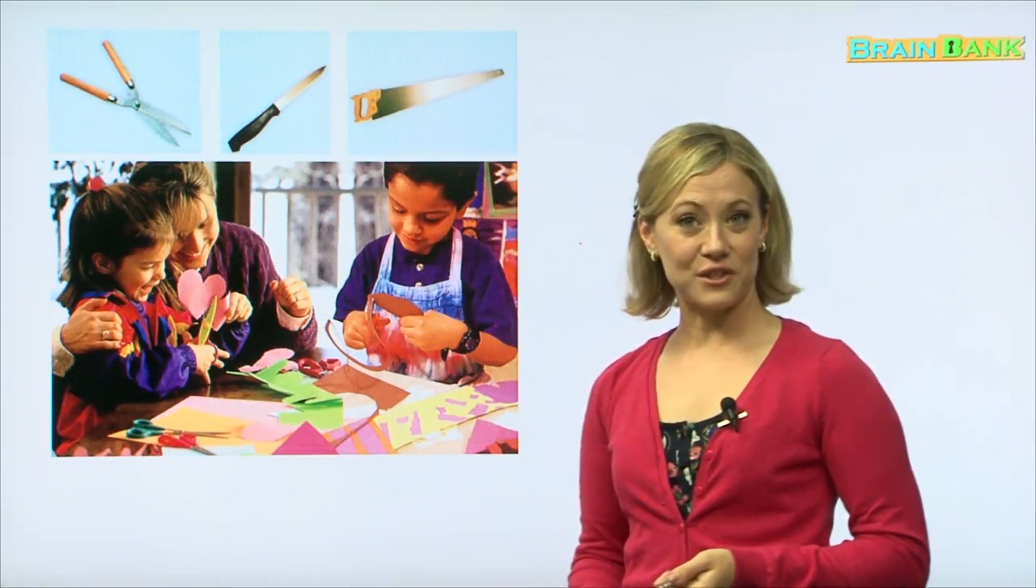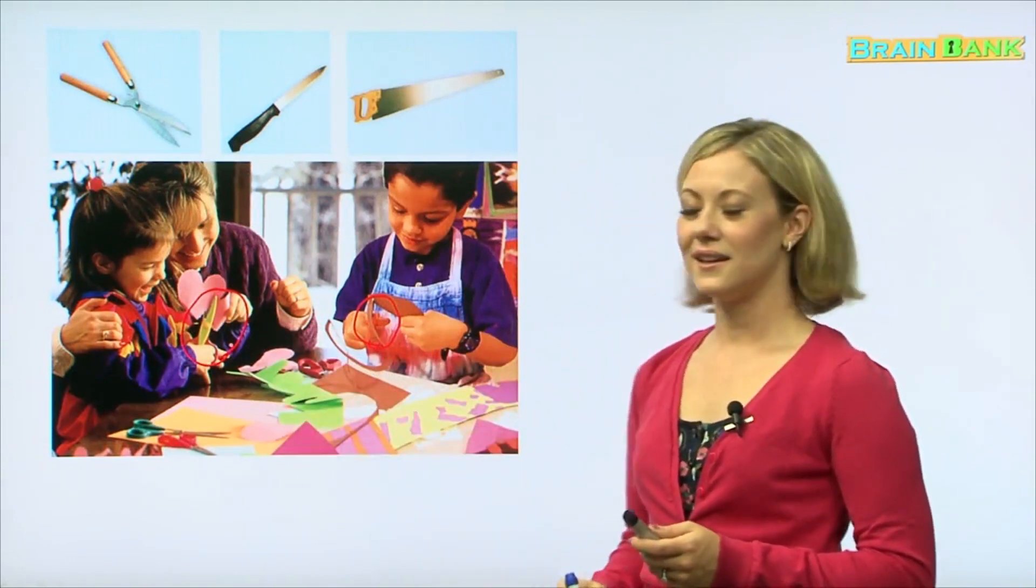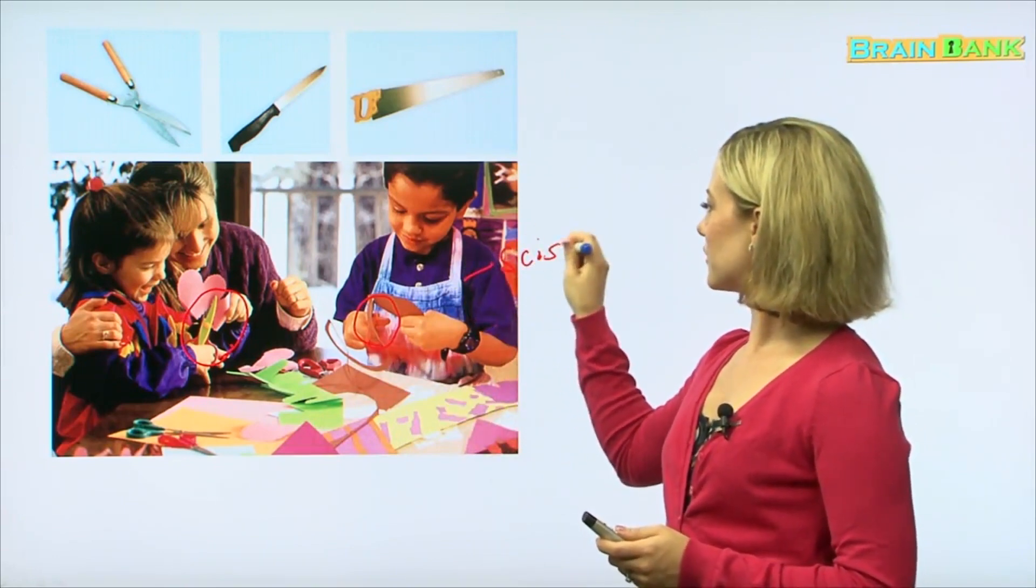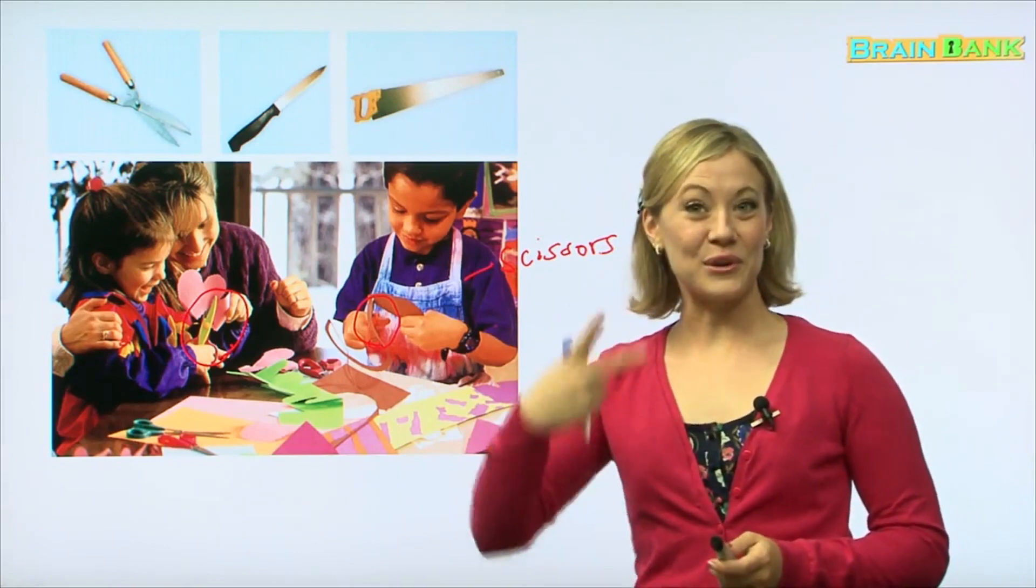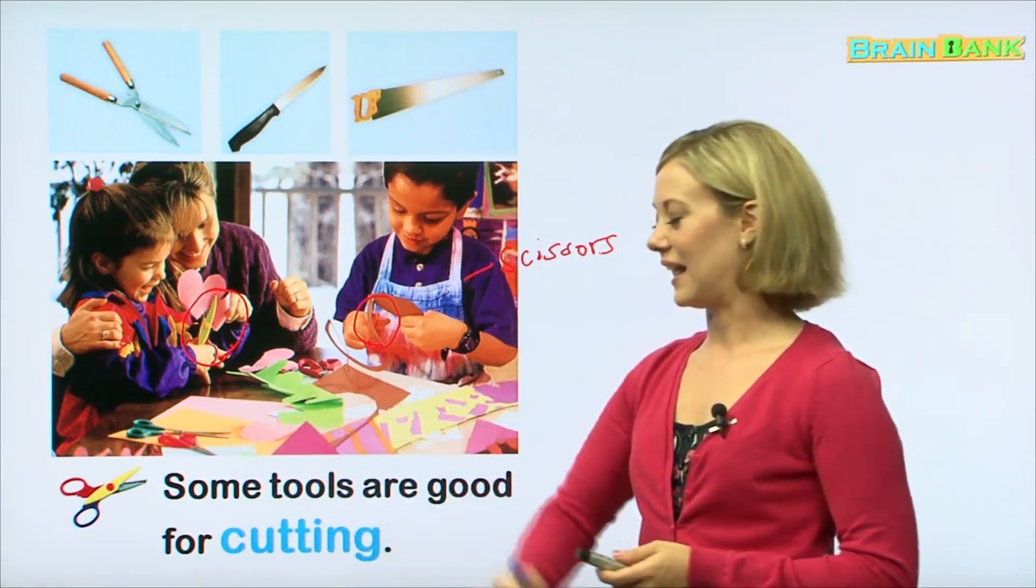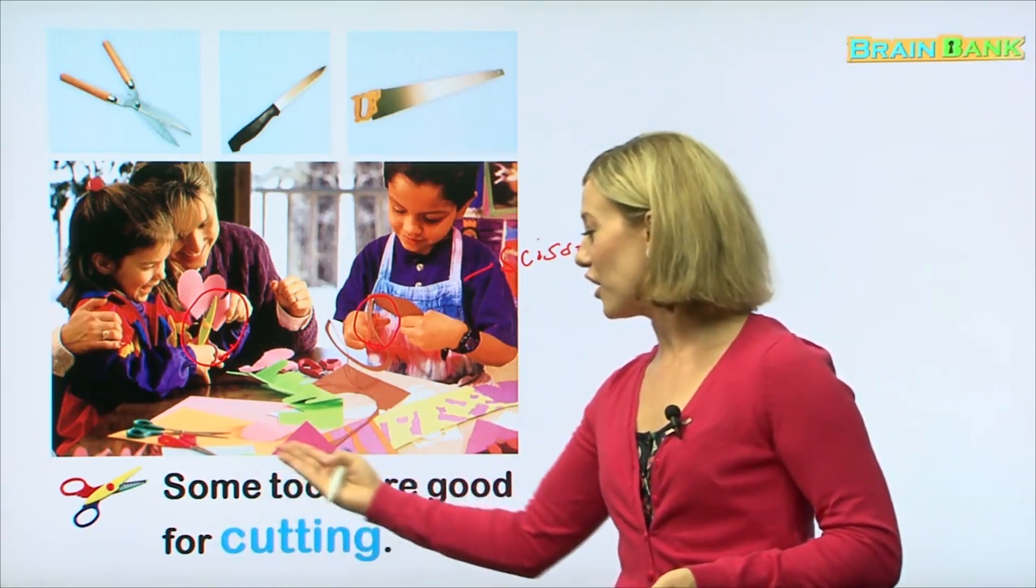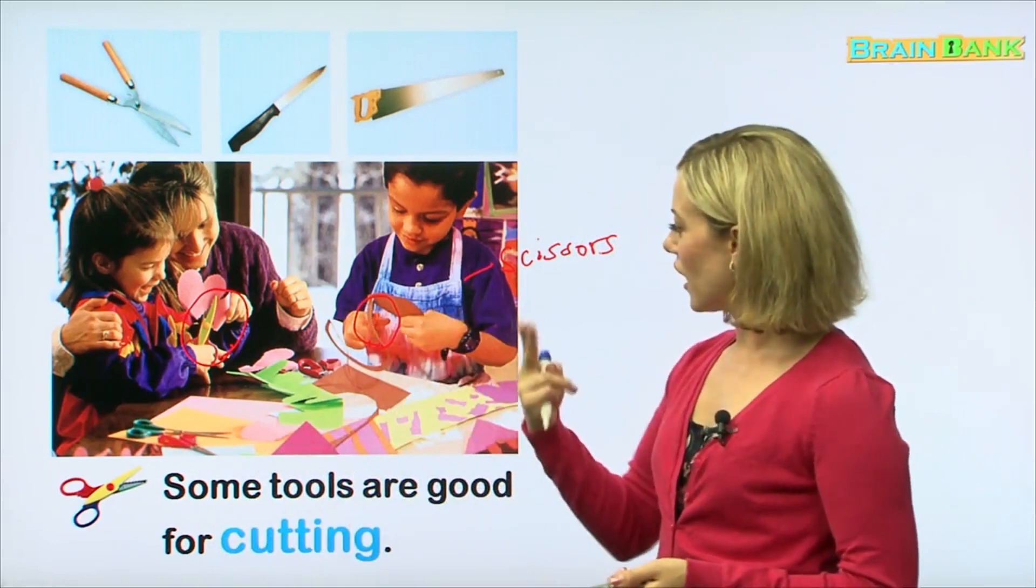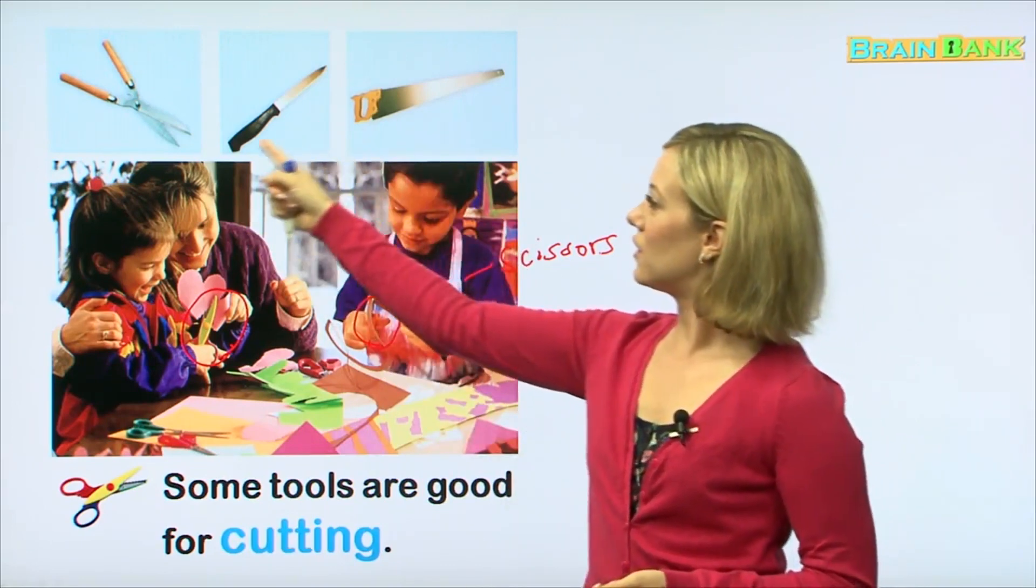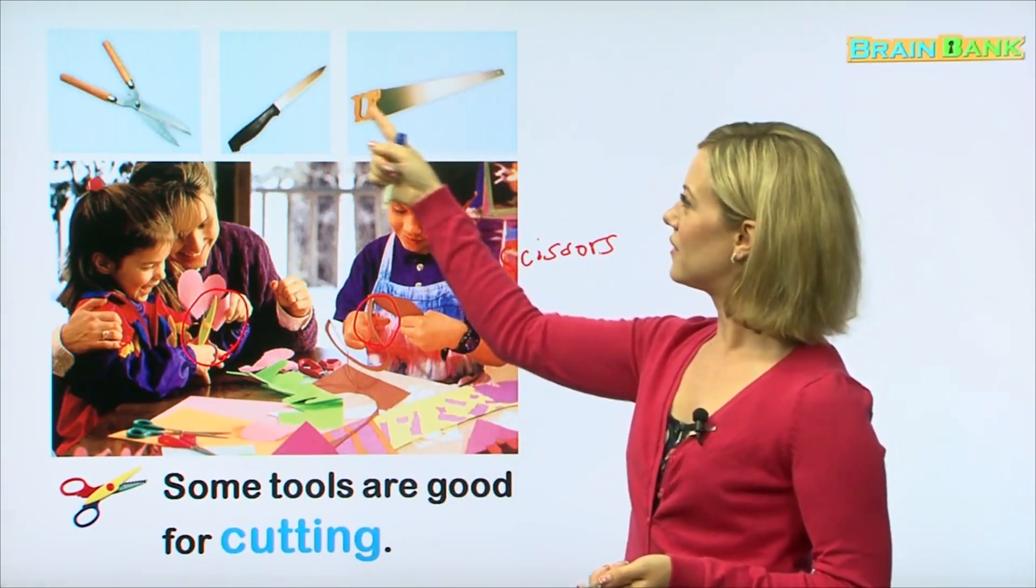Oh, here's another kind of tool. I think we talked about this one. Maybe you remember what tools are these. They are used for cutting. Yes, these are called scissors. Scissors are used for cutting. Some tools are good for cutting. Yes, and this boy and girl are cutting paper. Looks like they're making something maybe for their mom. And up here we have some other tools that are also used for cutting: this is a saw, a knife, and some shears.